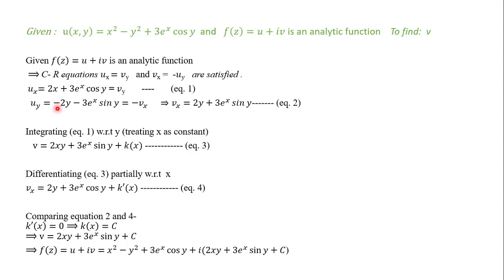For u_y, differentiating u with respect to y gives -2y - 3e^x sin(y), and using the CR equation v_x = -u_y, we get v_x = 2y + 3e^x sin(y) — equation 2. Now integrate equation 1 with respect to y, treating x as constant, to get v: this gives 2xy + 3e^x sin(y) + k(x), where k(x) is a function of x only — equation 3.